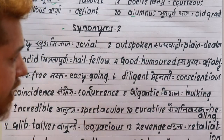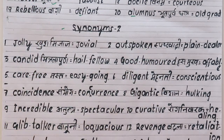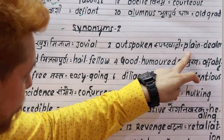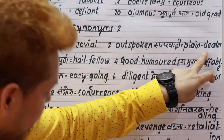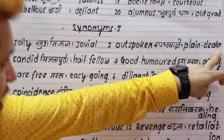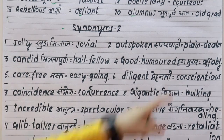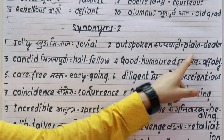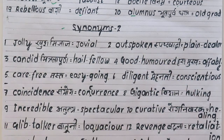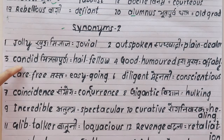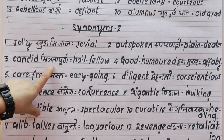Second word is 'outspoken', meaning someone who speaks their mind openly. The synonym is 'plain dealer'. For example: he is a plain dealer — I don't keep anything inside, I say what comes to mind. I am a direct, straightforward person.